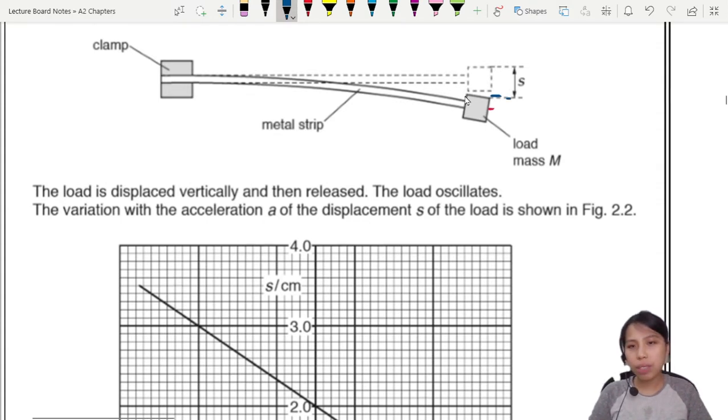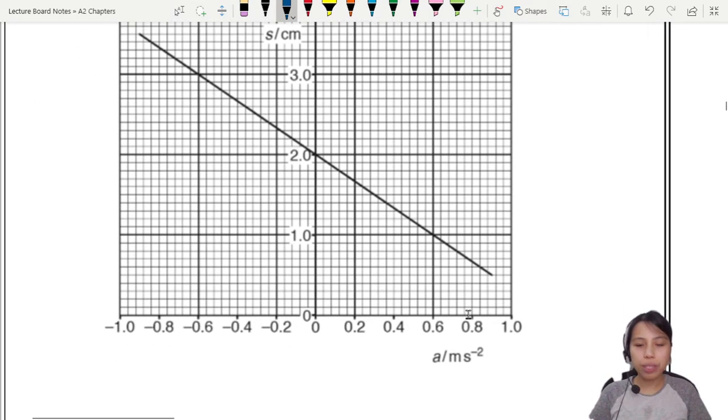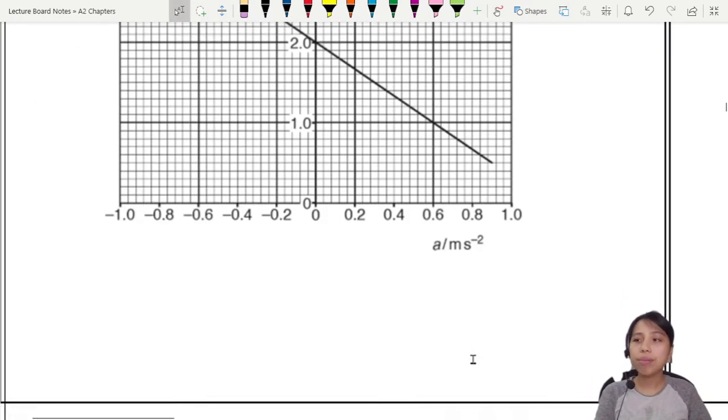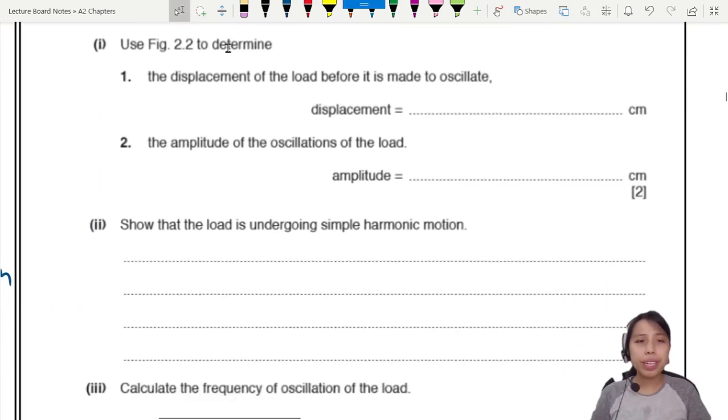So this displacement, even before you make it oscillate, it's already heavy. It already will bend down. So actually this is the equilibrium position right here. It already has some displacement s. Then we pull down it oscillates. What's this graph? S against acceleration. Well what do they want us to do with this?